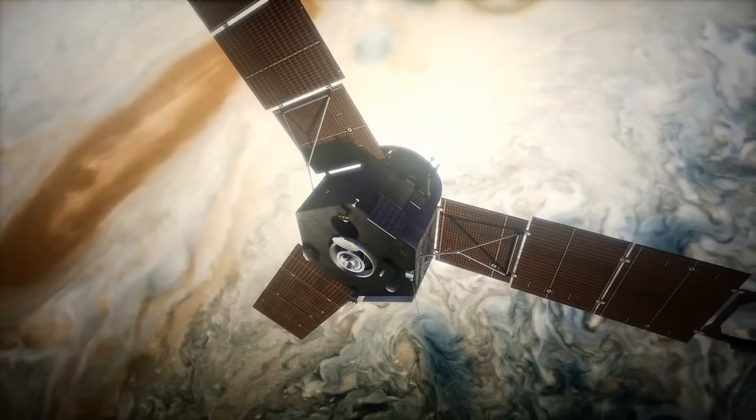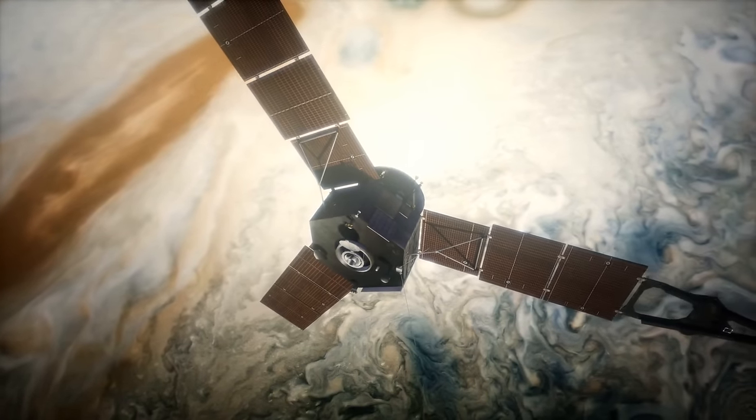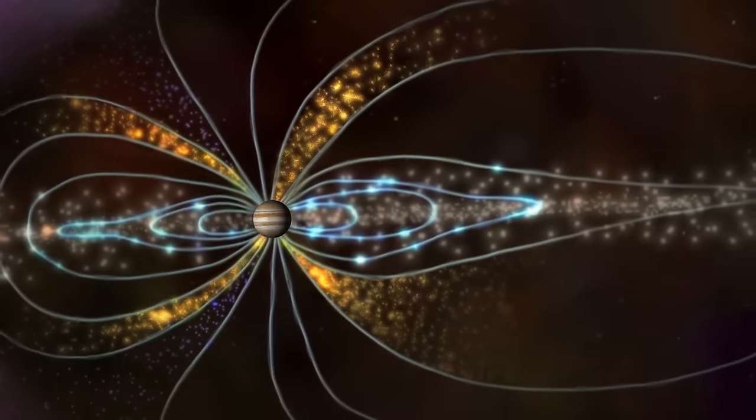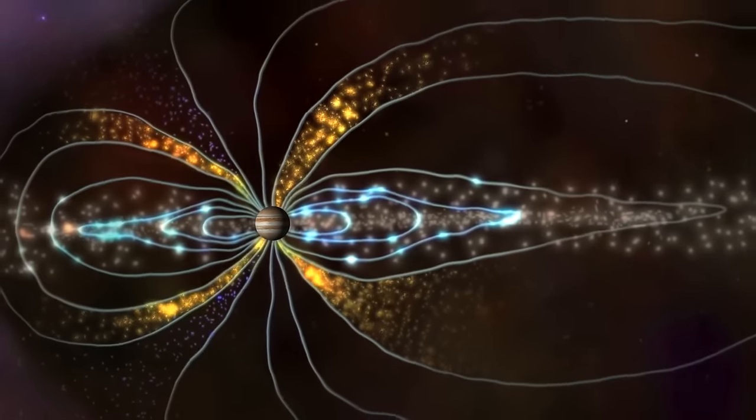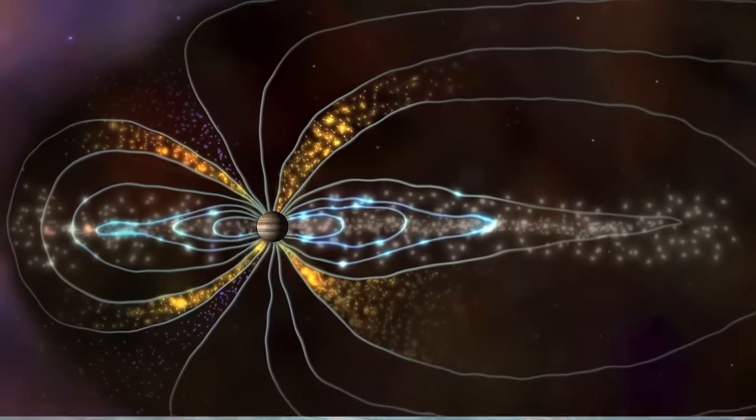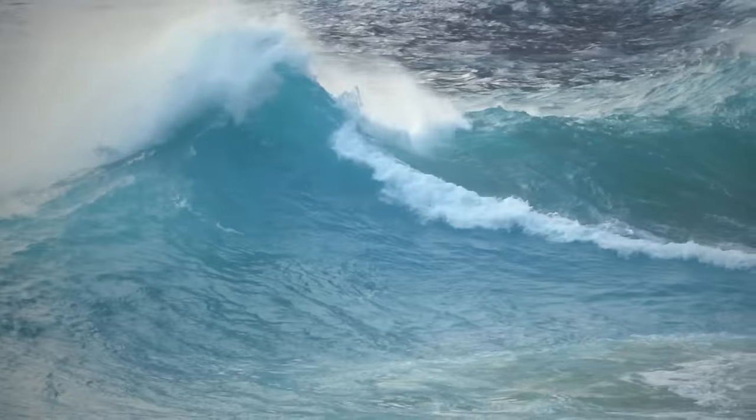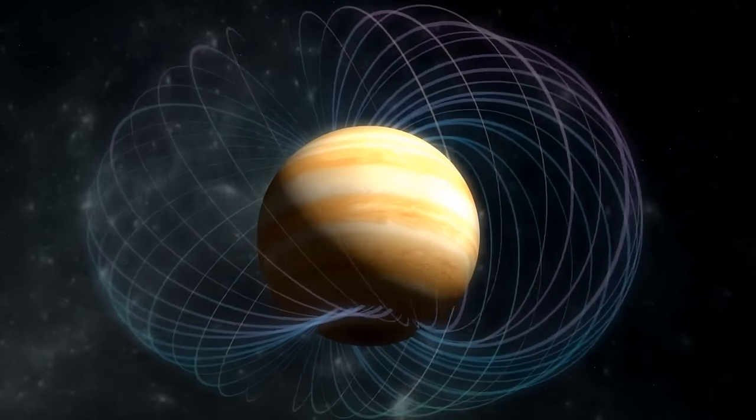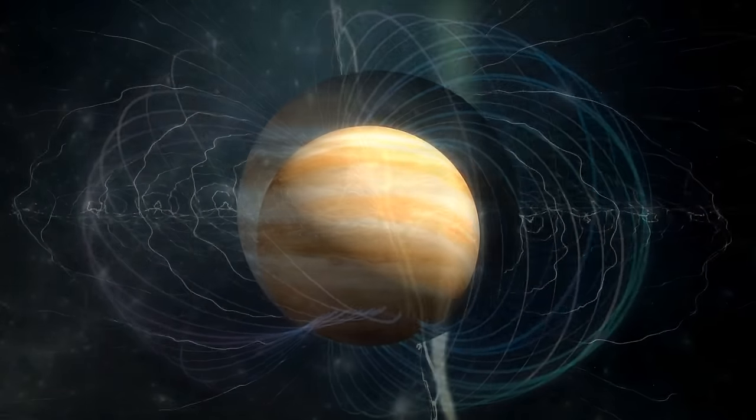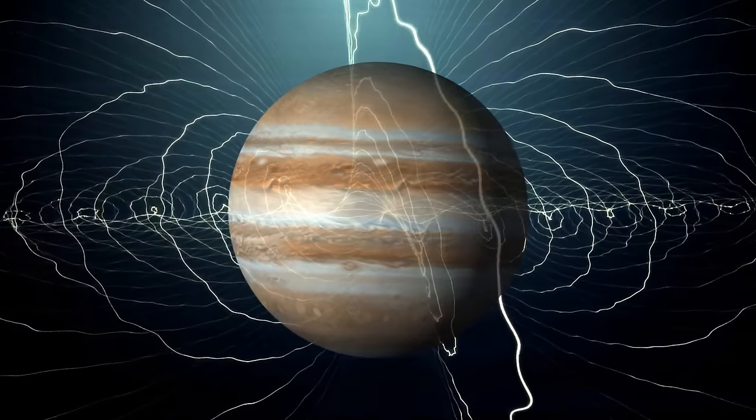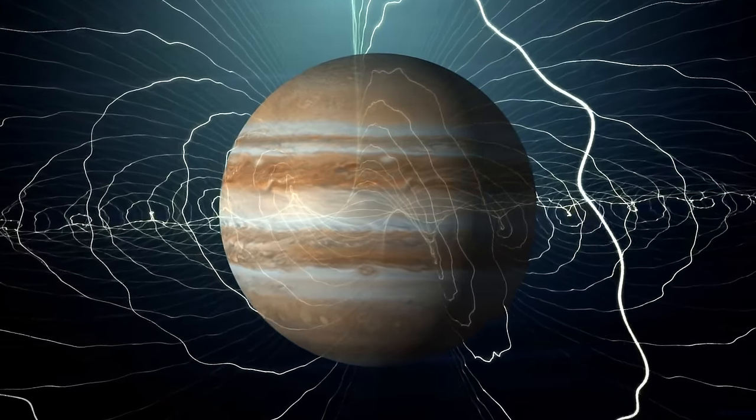So scientists have been looking at the data collected by Juno over the years and noticed something interesting. Jupiter's magnetic field has its own little motions, kind of like when you see waves in the ocean. Scientists call these motions torsional oscillations, which is just a fancy way of saying wave-like movements. It's like Jupiter is doing its own magnetic dance.